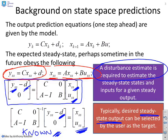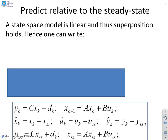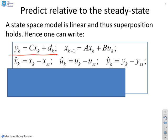Now a state-space model is linear and thus you can use superposition. Why is that important? Well, here's our original state-space model. Y equals CX plus D, X equals AX plus BU.